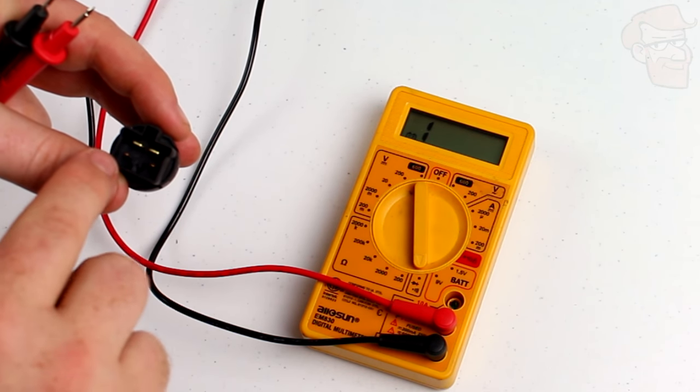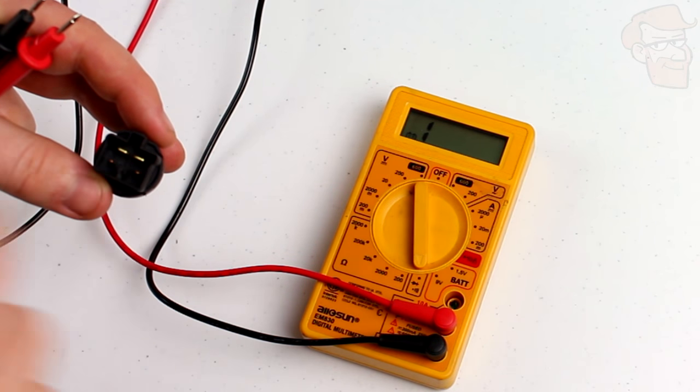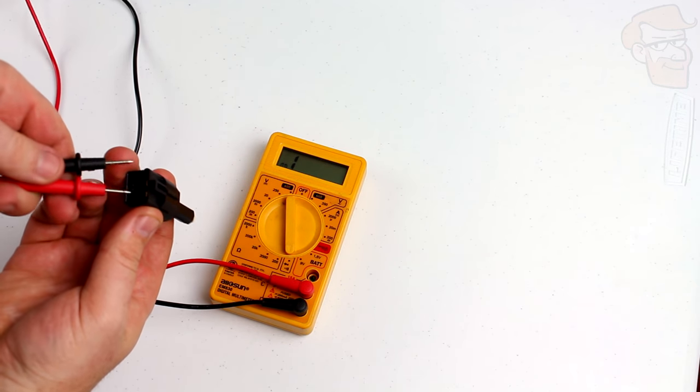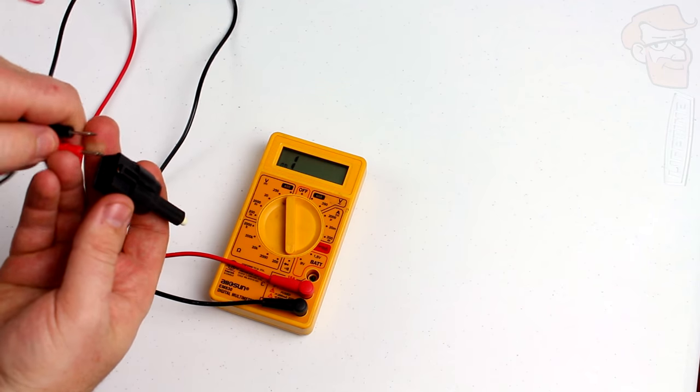So these two are small so they're paired up, these two are big and they're paired up. Let's start with these big ones, see if that sends any power through.